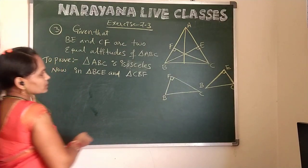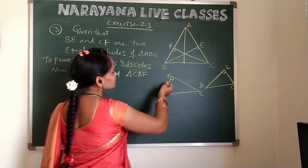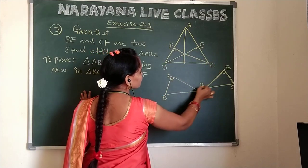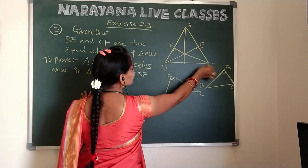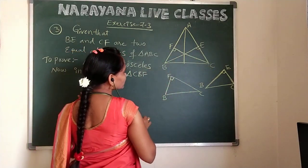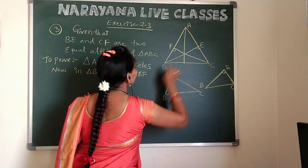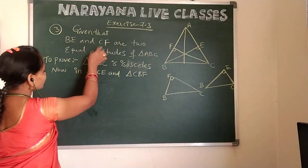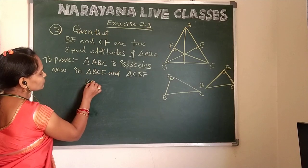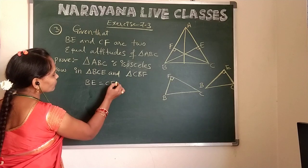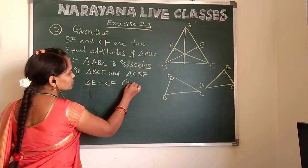In these two triangles, let me separate them for understanding. This is triangle BEC and this is triangle BFC. Now, equal altitudes are given, so based on that information, BE is equal to CF. The altitudes are equal, which is given in the question itself.